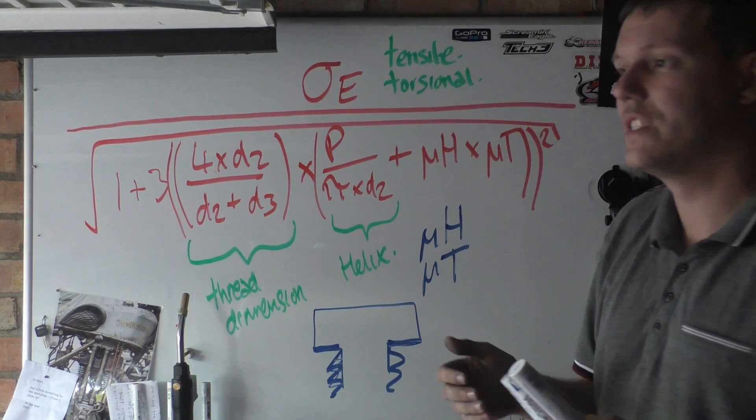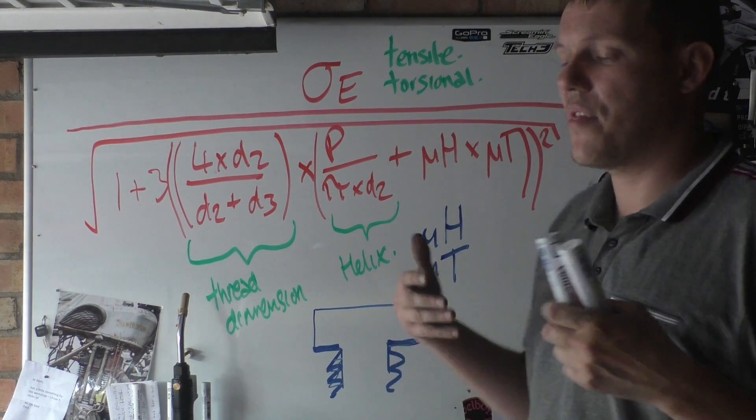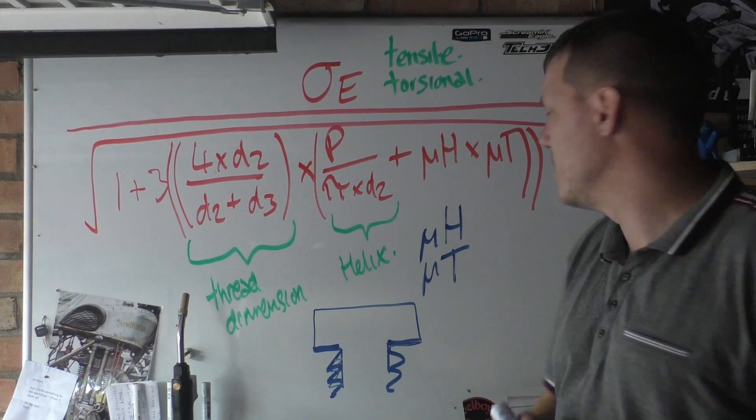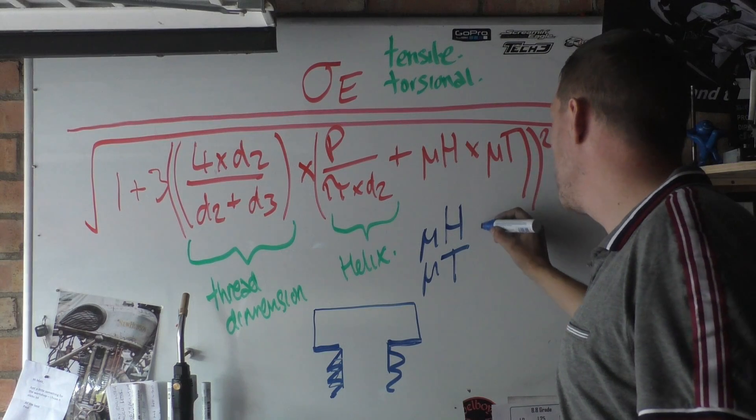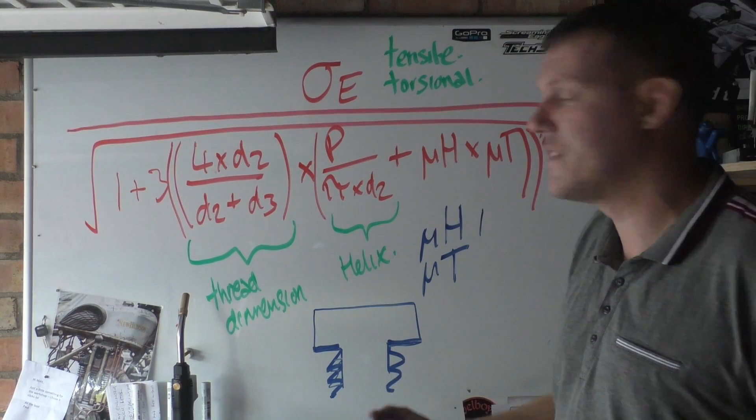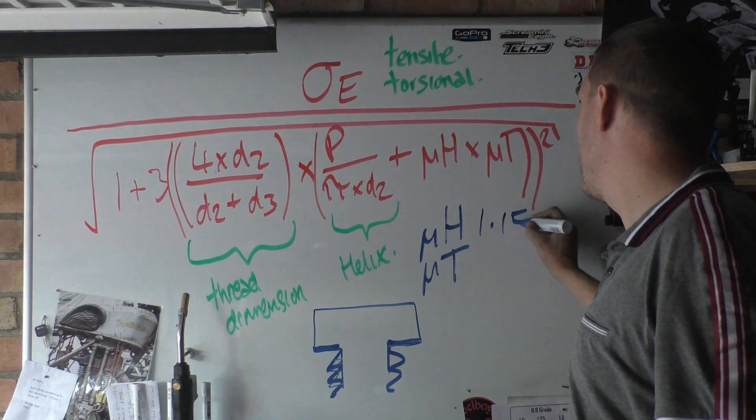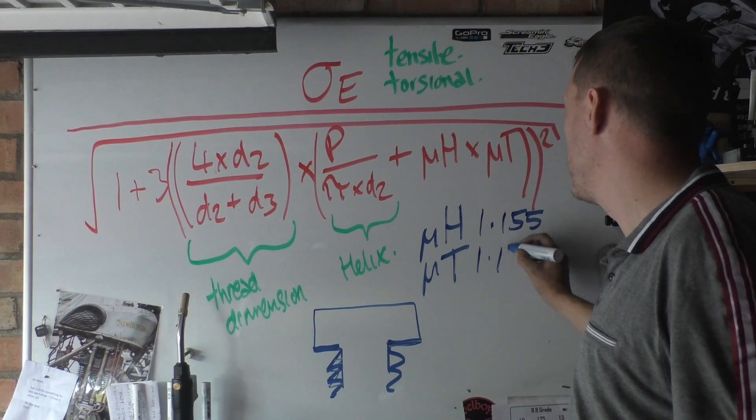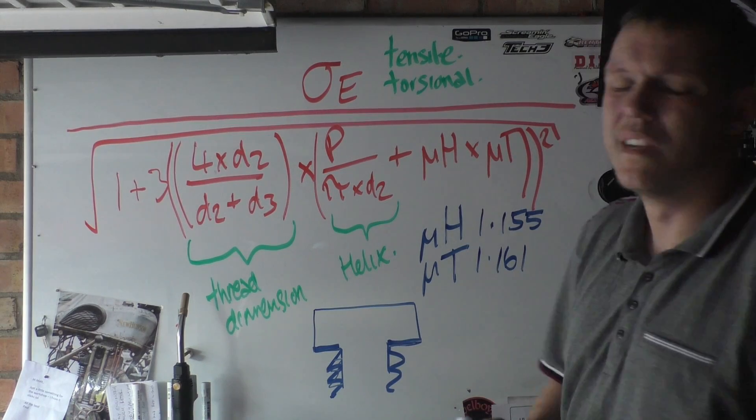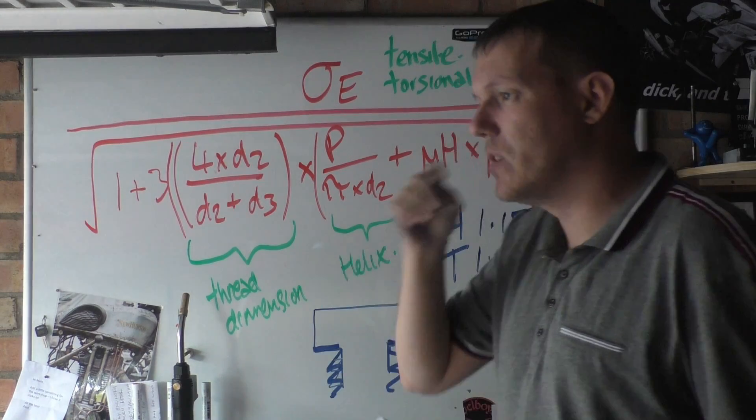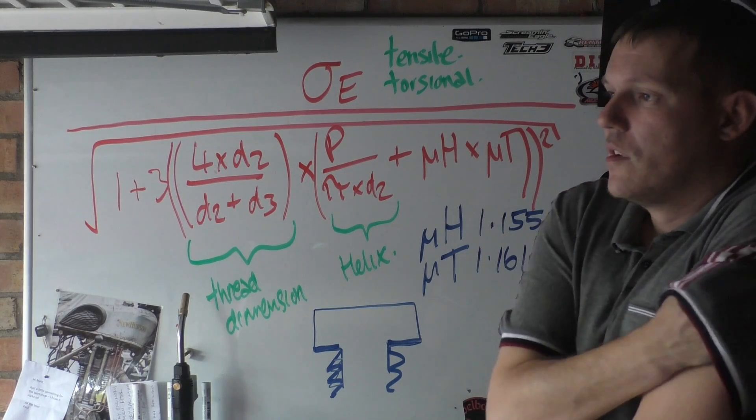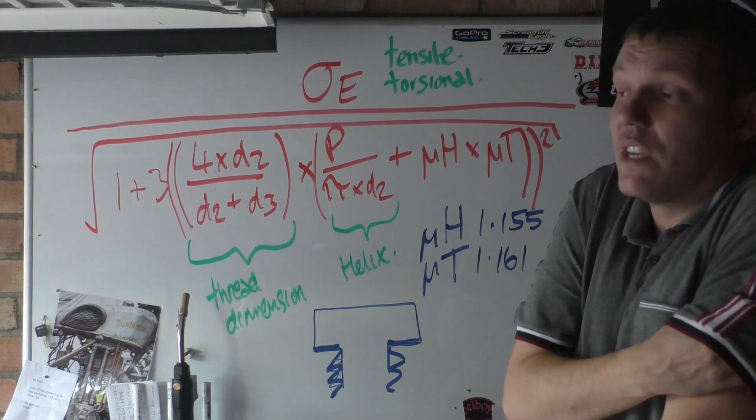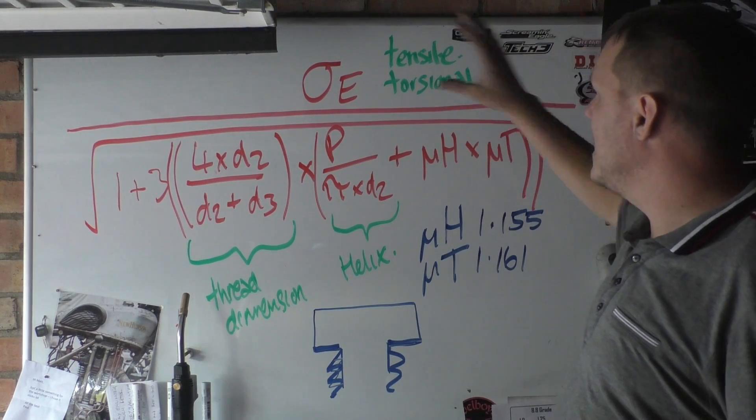So we have to know the friction between our threads and the head itself. And you can look up these and they usually give you numbers. I think H is, for a standard fitting, 0.155. And for a thread, it's I think 1.61. Depends on your coatings. Is it BZP? Is it black oxide? Is it just clean steel? Different for stainless steel. But you have your stresses at the top.